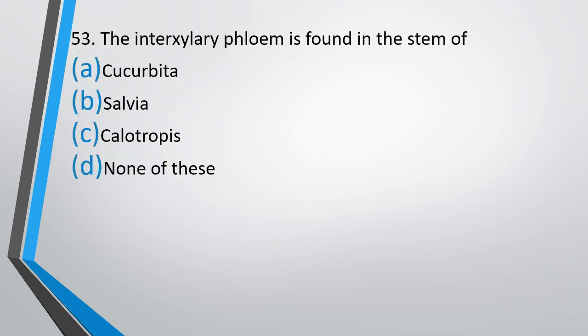Question number 53. The interzylary phloem is found in the stem of: Cucurbita, Salvia, Calotropis, none of these. Interzylary phloem is found in the stem of. The correct answer is option C, that is Calotropis.